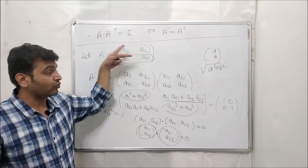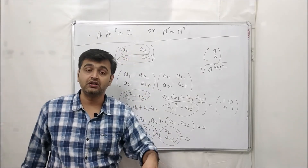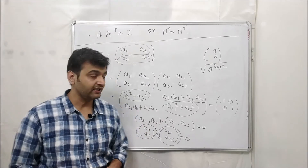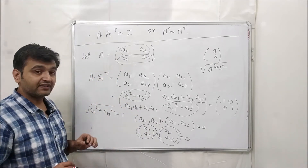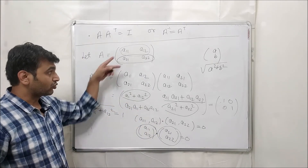This dot product equals zero, meaning the row vectors are orthogonal to each other. So for orthogonal matrices, we have just proved that row vectors are orthogonal and the length of every row vector is always 1.